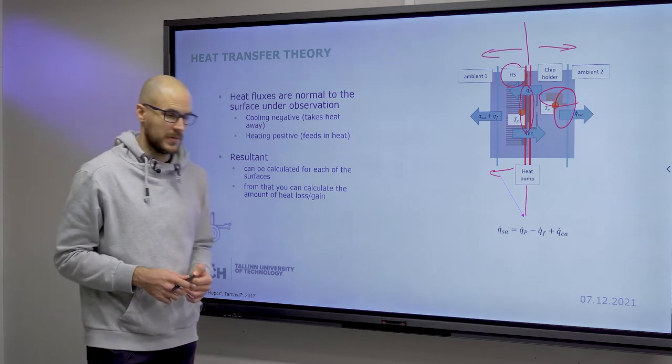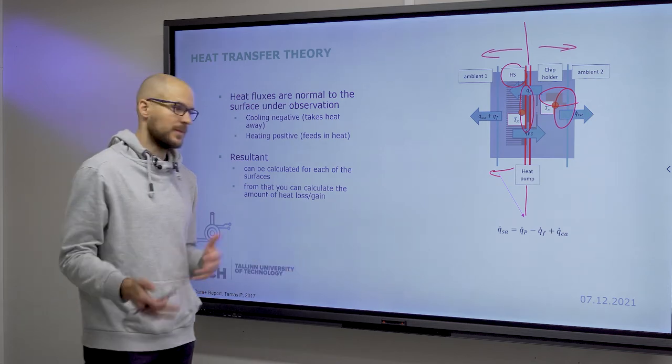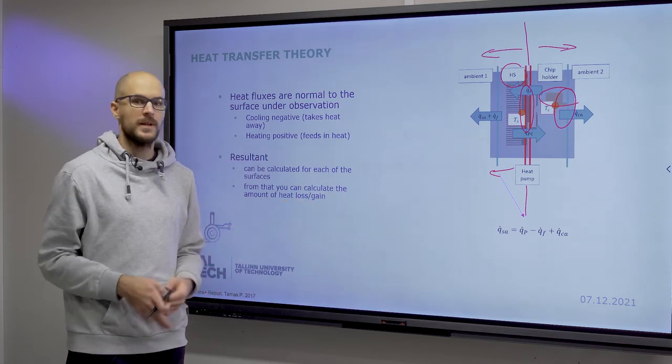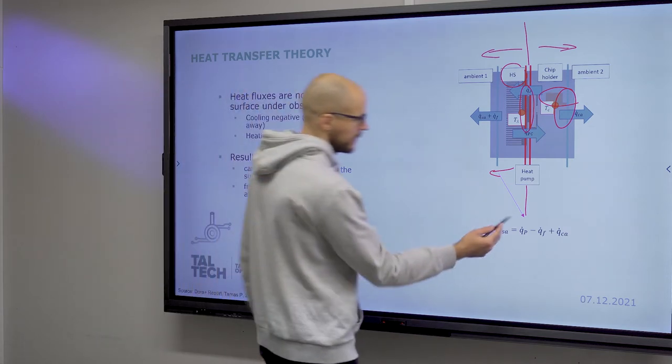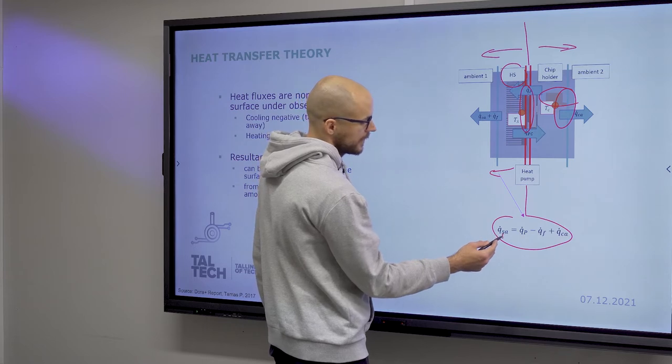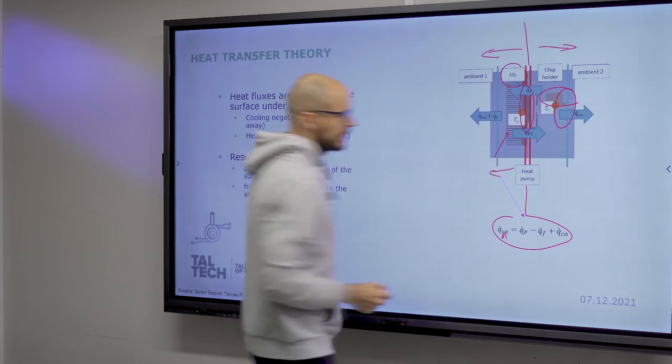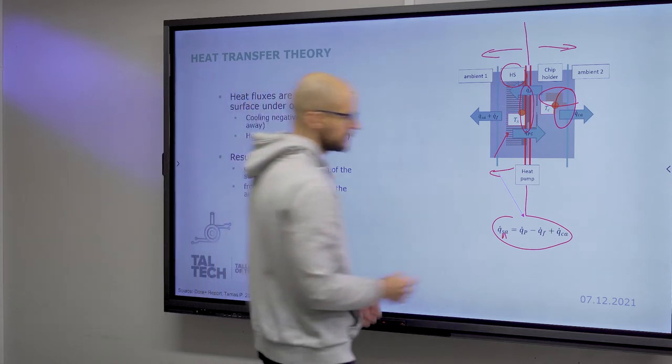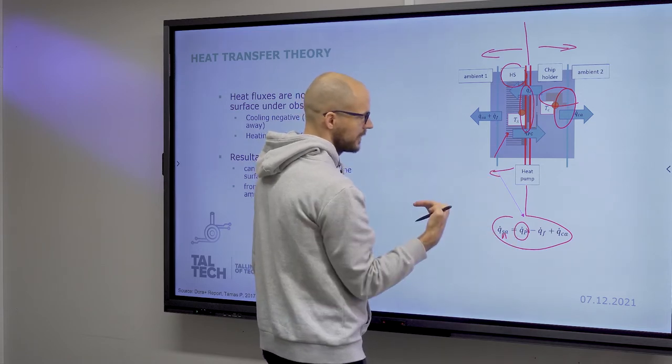Heat fluxes themselves are normal vectors, normal to the surface onto which you apply, can be positive or negative depending on the direction. If you take away heat, that's a negative heat flux. If you pump in heat, that's a positive heat flux. You can calculate the resultant for each of your surfaces, such as for the heat sink to ambient interface. You can calculate the heat fluxes, in this case the heat flux coming from the Peltier cell, which is positive.